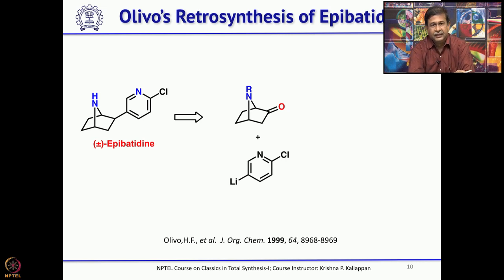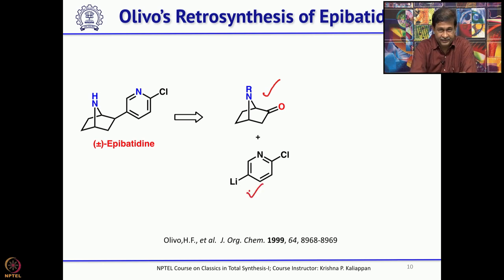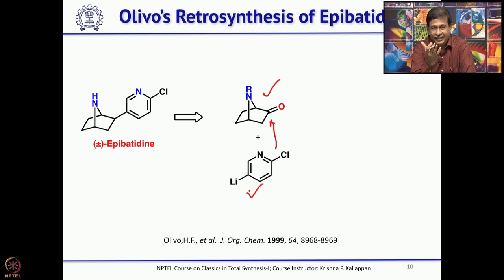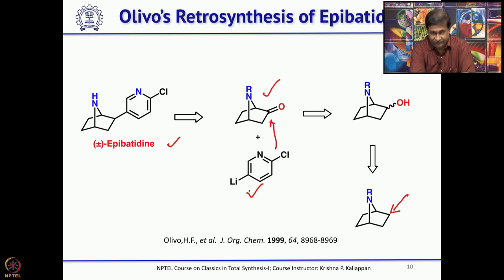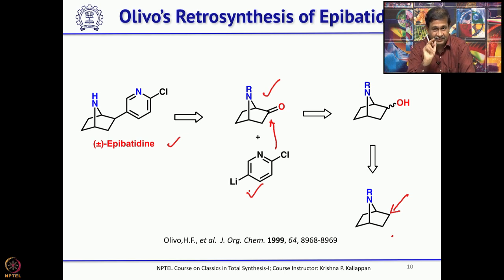From a retrosynthetic point of view, it was divided into two fragments — again a convergent strategy. This is the aza-bicyclo[2.2.1]heptanone system and this is the lithium species. Addition of this lithium reagent to the aza-bicyclo[2.2.1] system will give the alcohol; dehydration followed by hydrogenation will give epibatidine. The ketone was obtained from the alcohol by simple oxidation, and the key step is the biocatalytic hydroxylation. Introducing a hydroxyl group by simple chemical transformation on the aza-bicyclo[2.2.1]heptanone system is not straightforward, but Olivo cleverly used a biocatalytic method.